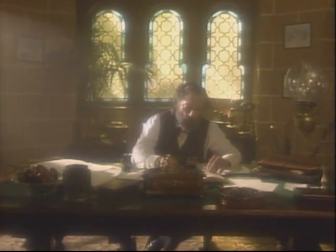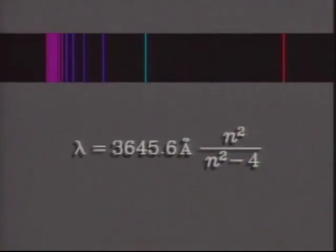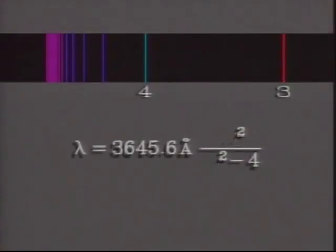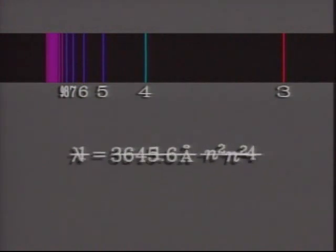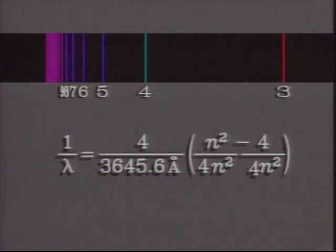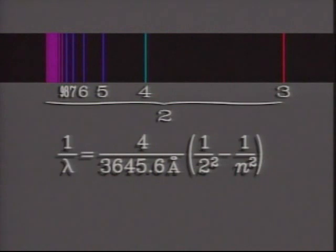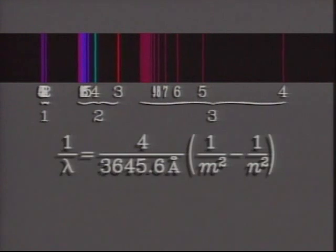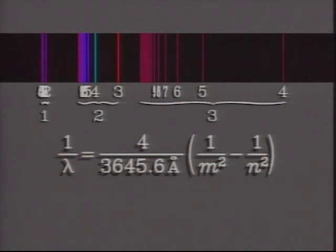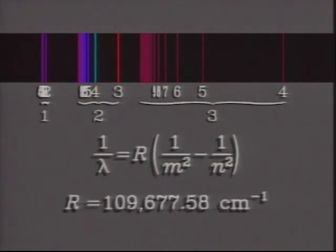But in 1885, a Swiss high school teacher, Johan Balmer, wrote a formula that nearly fit the wavelengths of all the known lines in the spectrum of hydrogen. Soon, the Swedish master of the spectroscope, Johannes Rydberg, generalized Balmer's formula. In Rydberg's version, a series of lines was generated by each set of integers m and n, and the quantity R, called the Rydberg constant, was measured with great precision. From that point onward, it was possible to predict new lines.